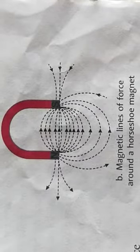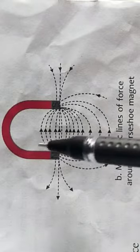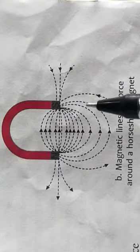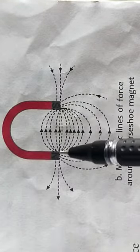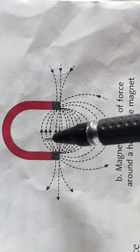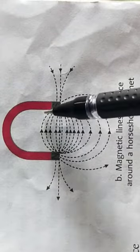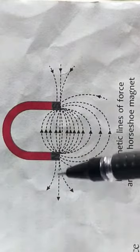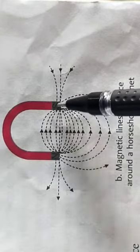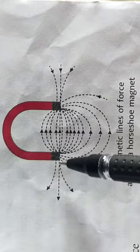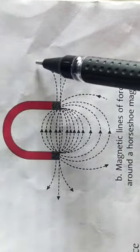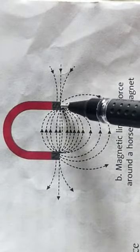Here in this diagram you can see a horseshoe magnet and how the magnetic lines of force are drawn around it. They originate from the north pole and move toward the south pole — here originating from the north pole, moving toward the south pole, and again here originating from the north pole moving toward the south pole.